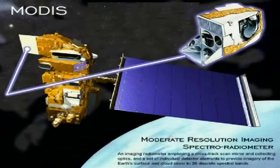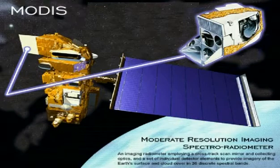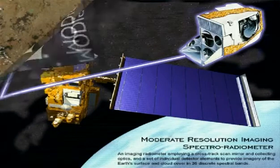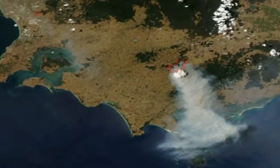MODIS, which stands for Moderate Resolution Imaging Spectroradiometer, is an instrument launched into low Earth orbit by NASA on board the Terra and Aqua satellites a decade ago. The instruments can capture information in 36 separate spectral bands of varying spatial resolutions: two have a spatial resolution of 250 metres, five of 500 metres and 29 of 1 kilometre. The Terra and Aqua satellites were recently used to monitor the extent of the wildfires in Australia. The red line indicates the boundaries of each fire and was overlaid during post-processing, so that the path of the fires could be clearly identified.